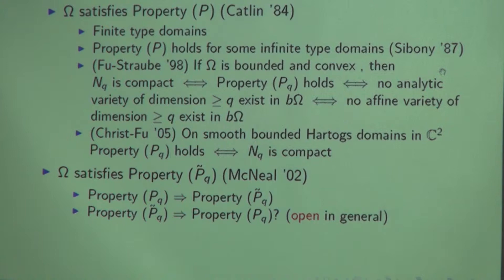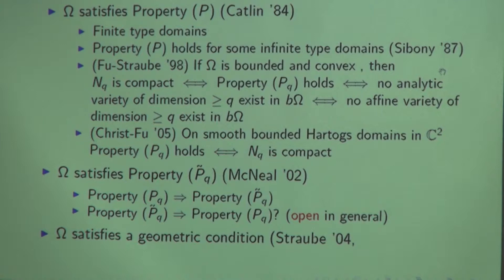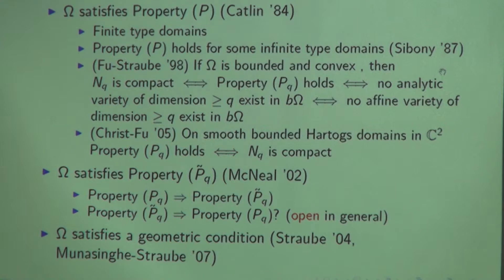Finally, my advisor back in 2004 introduced a geometric condition in C^2 and showed that if a smooth domain omega satisfies this condition, then N_1 is compact. His student Samangi Munasinghe worked on her thesis to generalize this geometric condition to higher dimensions n greater or equal to 3, and they published a paper on this. I won't talk more about the geometric condition, but I wanted to give this historical development.